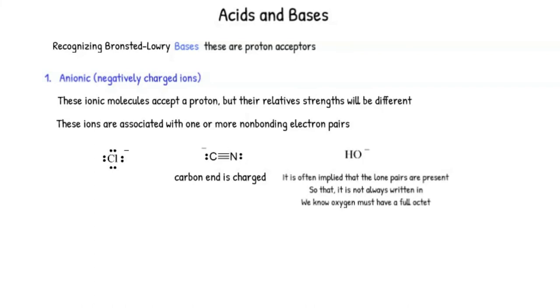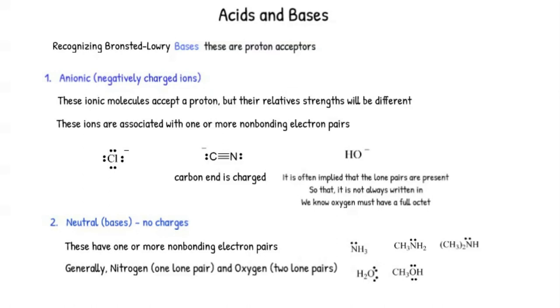Number two are neutral bases where there are no charges. These have one or more non-bonding electron pairs. Generally, nitrogen has one lone pair of electrons, and oxygen has two lone pair of electrons.